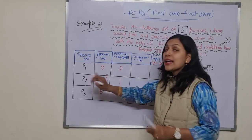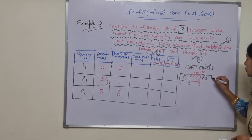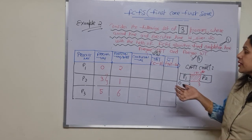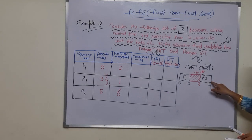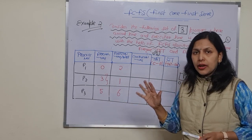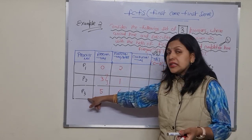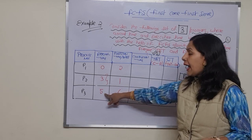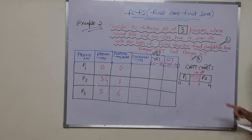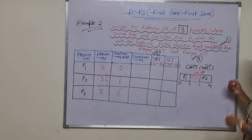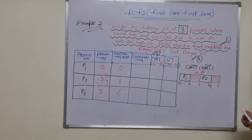At time 3, process P2 arrives and we write P2 on the Gantt chart. Its execution time is 1, so it runs from 3 to 4. Now at time 4, we check which processes have arrived. Process P3 arrives at time 5, but we are currently at time 4, so the CPU sits idle again for one quantum of time, from 4 to 5.